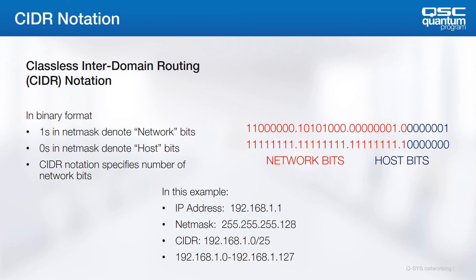This makes the allowable host range 192.168.1.1 to 192.168.1.126. The final address, 192.168.1.127, becomes the broadcast address for the subnet.